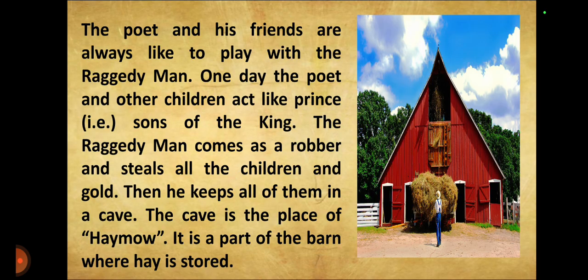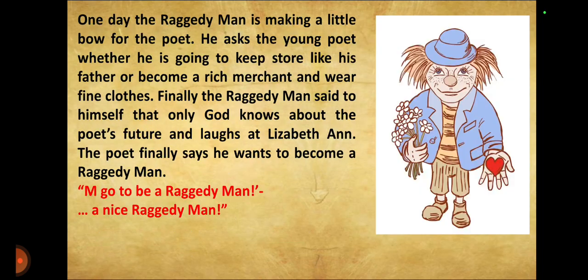The poet and his friends always like to play with the Raggedy man. One day they act like children of kings and the Raggedy man acts like the robber. He steals all the children as well as coal and keeps them all in a cave — which is nothing but the place of the hay mow, the part of the barn where hay is stored.